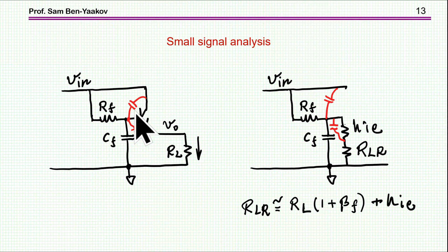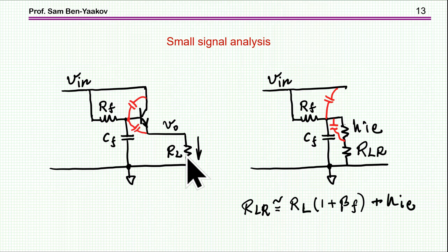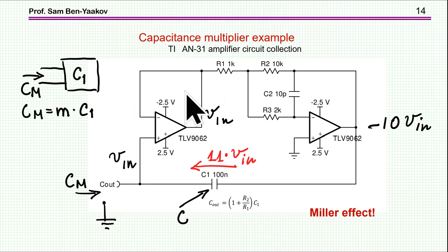That's not the end of the story. We have here two diodes, and diodes have capacitances — especially the conducting diode, which has a fairly high capacitance. This means there might be high-frequency injection into the load, well above the breakpoint. This is something to be aware of and to address, which I'll discuss later.